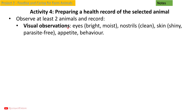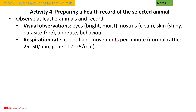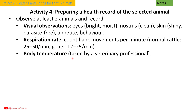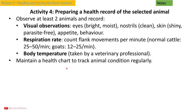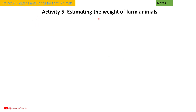Observe at least two animals and record visual observations: eyes (bright and moist), nostrils (clean), skin (shiny and parasite-free), appetite, and behavior. Also record respiration rate by counting flank movements per minute — normal for cattle is 25 to 50 per minute, and for goats 12 to 25 per minute. Body temperature should be taken by a veterinary professional. Maintain a health chart to track animal condition regularly.